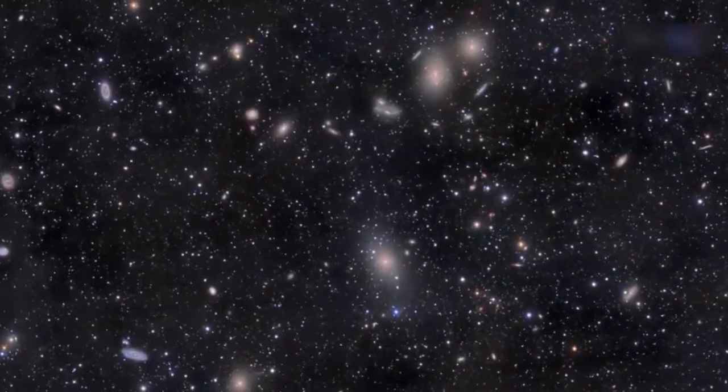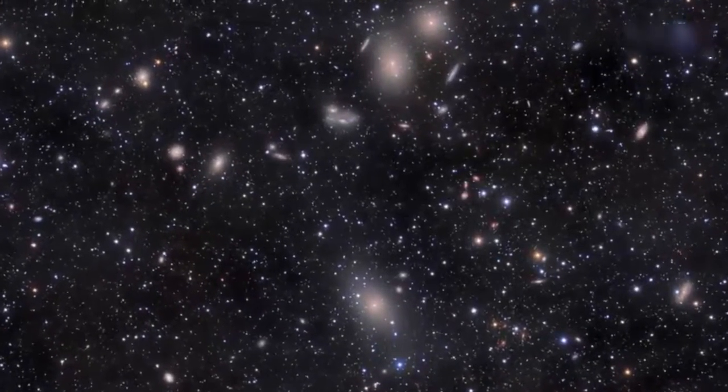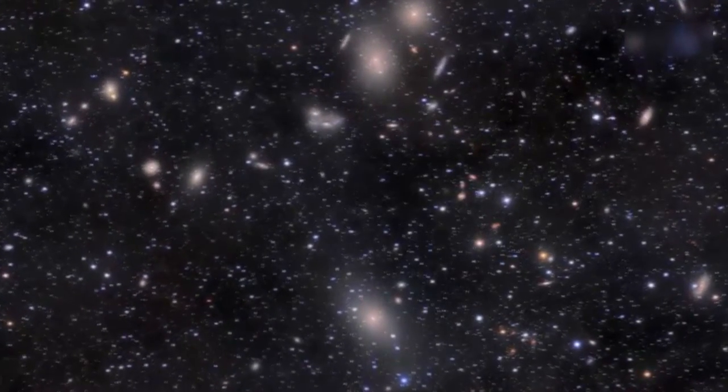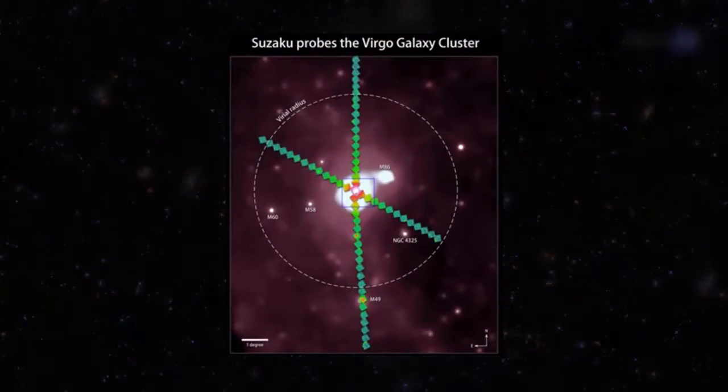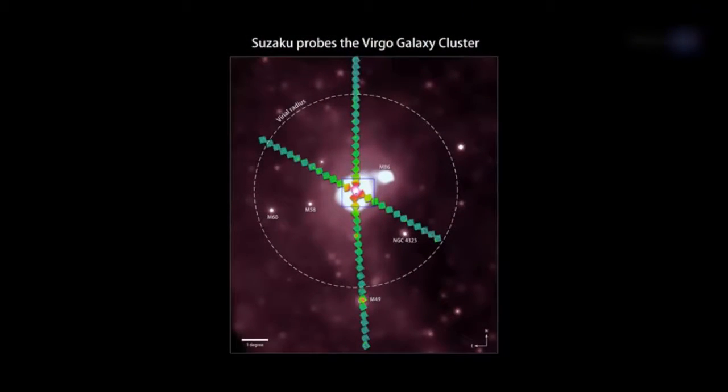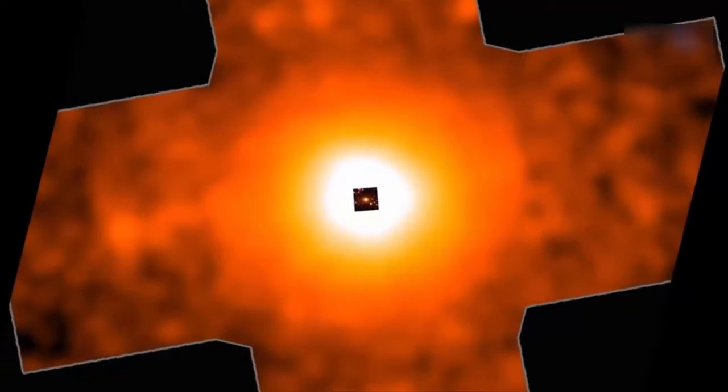The Virgo Cluster is a massive swarm of more than 2,000 galaxies, many similar in appearance to our own Milky Way, located about 54 million light-years away. The space between the member galaxies is filled with a diffuse gas so hot that it glows in X-rays.